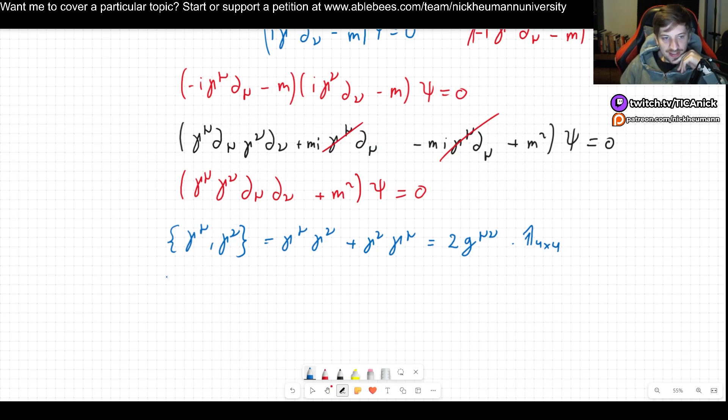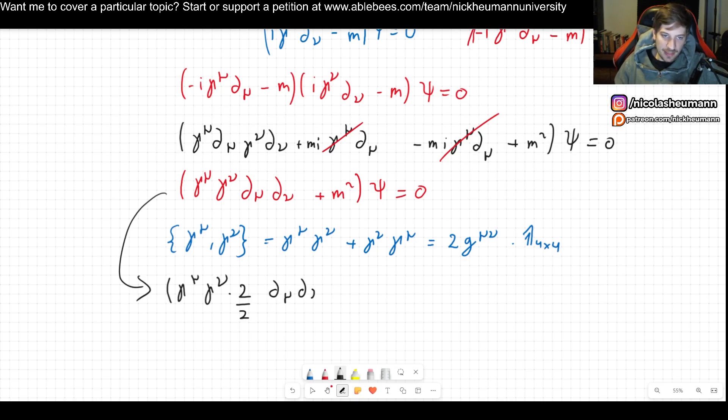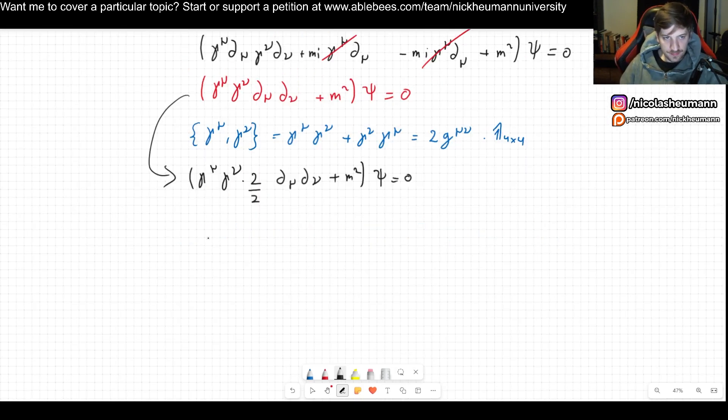So what I can now do is say okay I'm going to write what I had there like this. I have gamma mu gamma nu and now I'm going to multiply it by two and divide by two and then I leave everything the same. I have done nothing illegal. Don't call the cops on me. I have done nothing wrong.